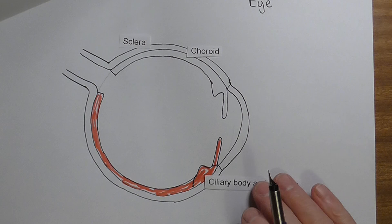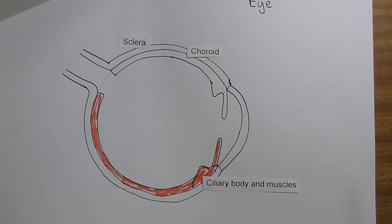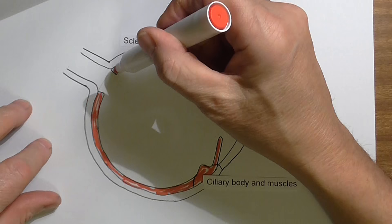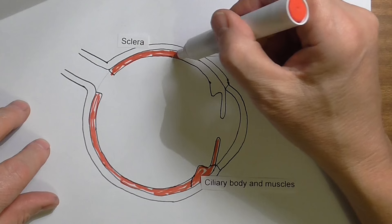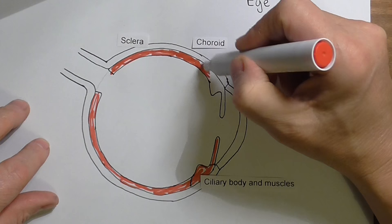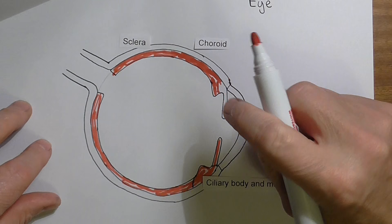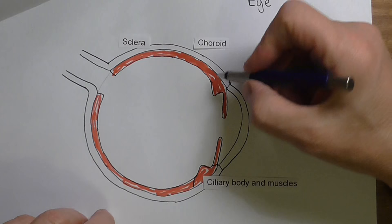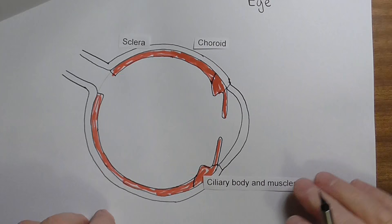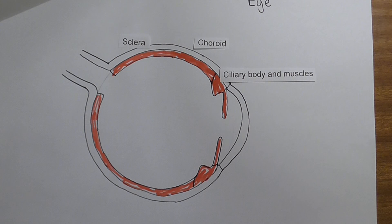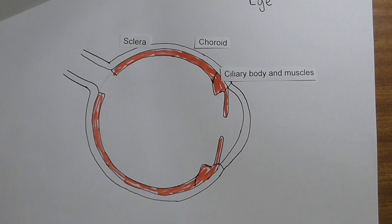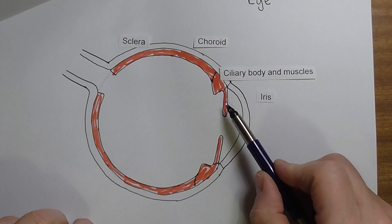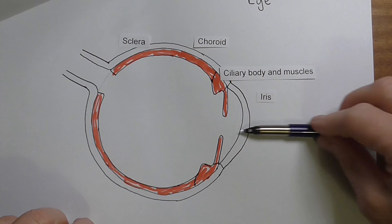Just bear with me on the anatomy at the moment, because we will be looking at the physiology in the next clip. The choroid layer takes blood supply to most of the eyeball, then broadens out in the ciliary area, and then continues as the iris. The ciliary body and muscle are there, and the iris is the coloured part of the eye that we see when looking at it from the front.